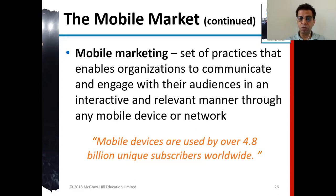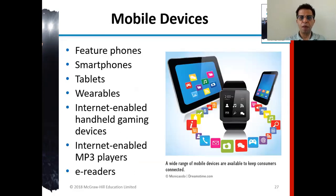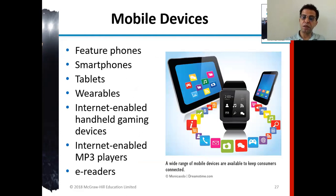When doing mobile marketing, you need to focus on who is using what kind of mobile device. There are different form factors — laptops, tablets, and mobile phones. Mobile devices include feature phones, smartphones, tablets, wearables, internet-enabled handheld gaming devices, internet-enabled MP3 players, and e-readers. A wide range of mobile devices are available to keep consumers connected.